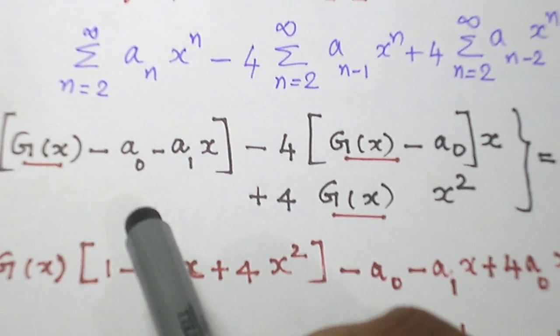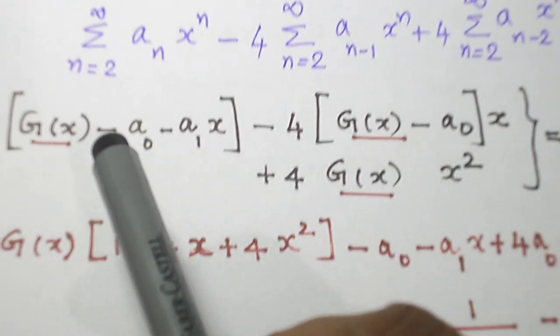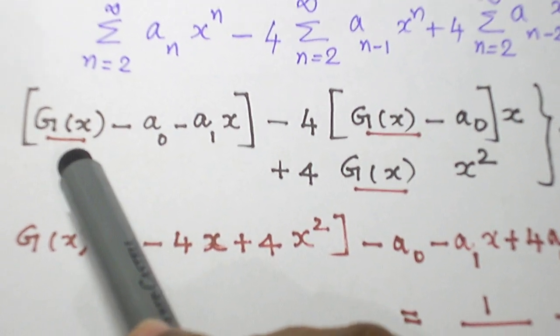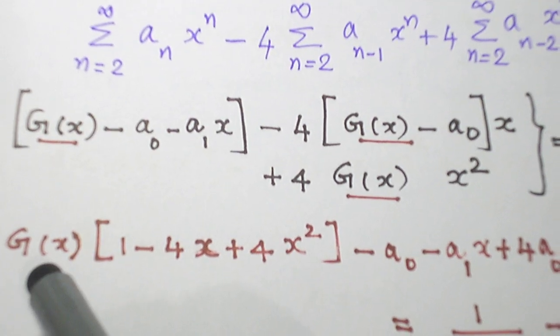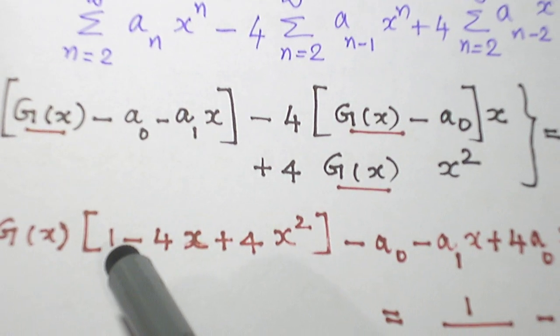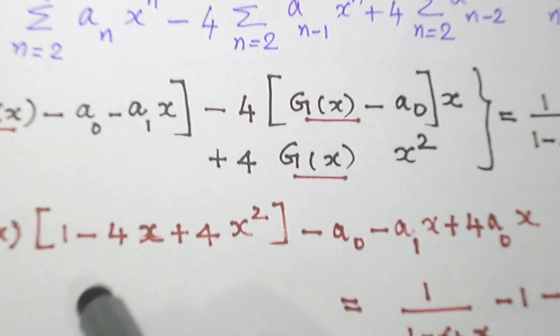And I am going to find out G(x) in terms of x. So let me combine the G(x) terms on the left hand side. So these are the 3 G(x) terms. Let me combine it. So 1 will come here. Minus 4 into x multiplied and come here.